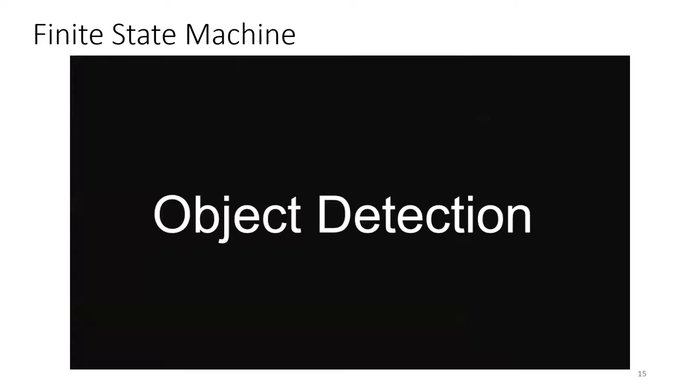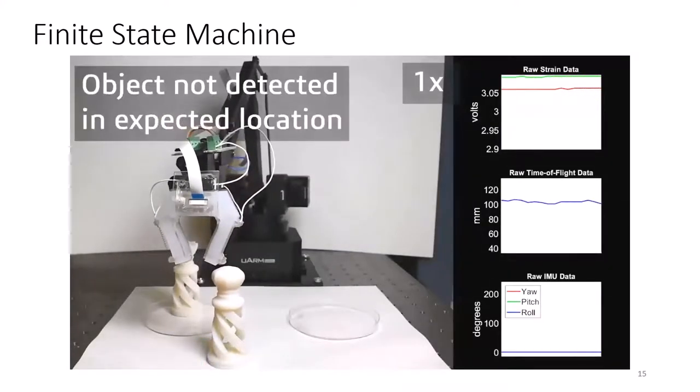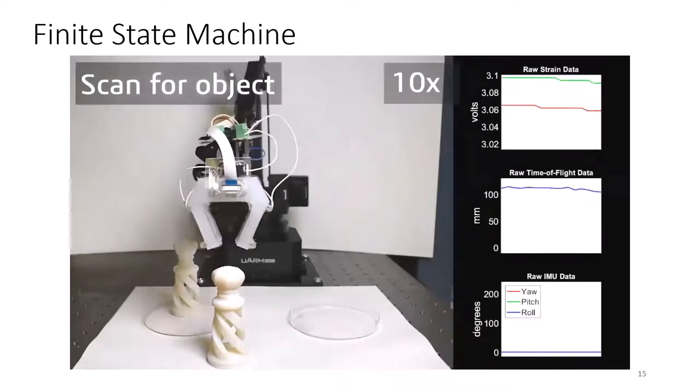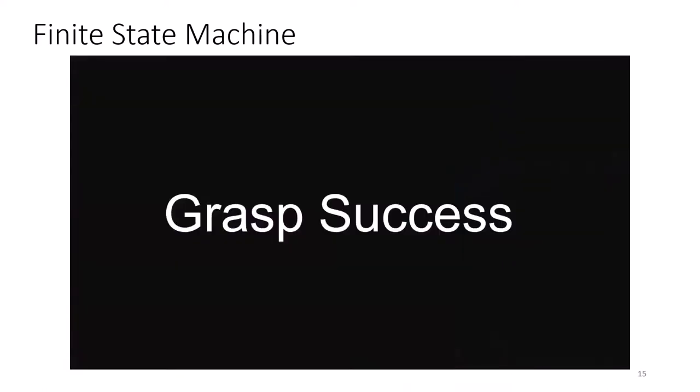Using this threshold scheme, the finite state machine can make high-level decisions with the sensor data. We'll start with a demo of the object detection, where I move the object from the expected location. The system recognizes that it is no longer there and goes back to the scanning state. Next is grasp success, where I hold down the object to prevent the gripper from picking it up successfully.